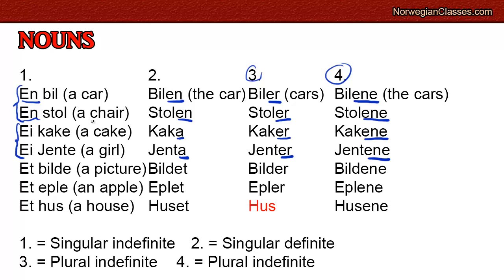In some dialects you can skip the feminine altogether and just use masculine forms. So it's allowed to say 'en kake, kaken, kaker, kakane' and 'en jente, jenten, jenter, jentene.' However, that is not the most common version, so it's good to learn using the feminine form. If you have a noun and you're in doubt which gender it is — whether it's masculine or feminine — just choose the masculine form.